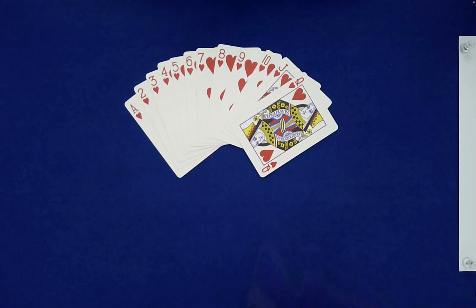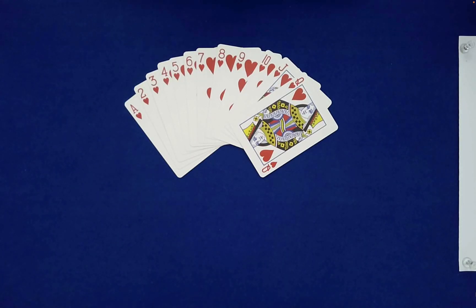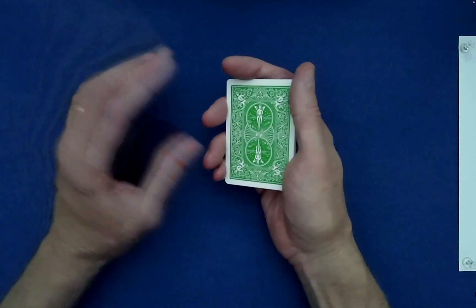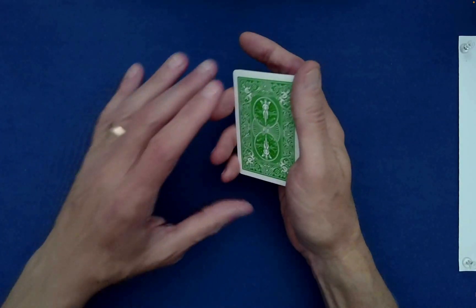So as you can see, I have Ace through Queen of Hearts. What we're going to do together is we're going to mix these cards face up, face down, and the order as well.